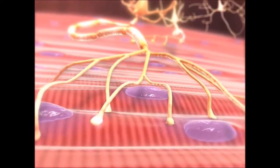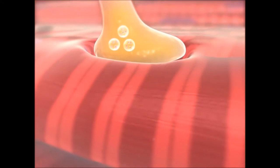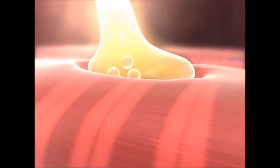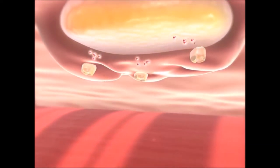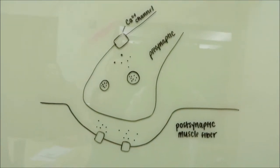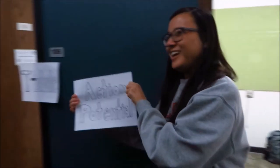The action potential that travels along the sarcolemma and into the T-tubule is dependent on both the neuromuscular junction and acetylcholine. An action potential arrives at the presynaptic terminal, causing the release of the neurotransmitter acetylcholine. Note that this stimulus is facilitated by calcium ions entering the presynaptic terminal. Acetylcholine then diffuses across the synaptic cleft, where it binds to acetylcholine receptors located on the postsynaptic muscle fiber, resulting in depolarization. Remember that acetylcholine is destroyed by the enzyme acetylcholinesterase. Once threshold has been reached, an action potential is generated, and this same action potential is the one that travels across the sarcolemma.